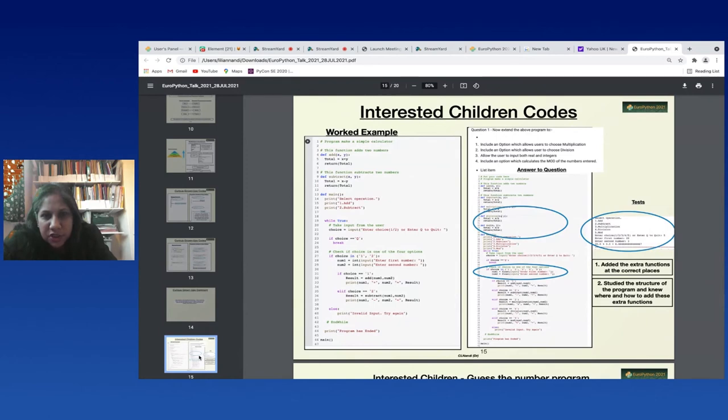Let us look at what the interested children produced. This is from a 13-year-old here. They were introduced to a worked example here - this worked example - it's a program to make a simple calculator. They decide whether they want to add or subtract, they select an option, they input two numbers, and then the program adds or subtracts the two numbers depending on what they chose. And you can see a lot of functions here. They were then asked to extend the function or the program to include multiplication and division, and you can see that they managed to study the structure of the program and they knew exactly where to put the functions of division and multiplication. They also tested the program that they created until they got it correct.